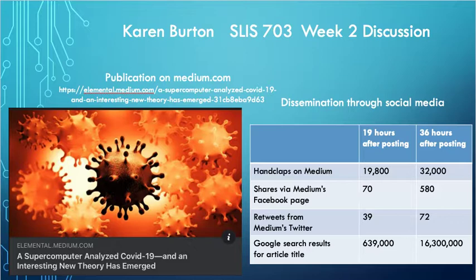My piece of information is the article titled 'A Supercomputer Analyzed COVID-19 and an Interesting New Theory Has Emerged: A Closer Look at the Bradykinin Hypothesis.' I first encountered this article through the Facebook share of a friend of mine working on her Ph.D. in Biological Sciences. The article was written by Thomas Smith and published on the publicly accessible website Medium.com. It explains the findings of a scientific paper and provides a link to the original paper. Therefore, the article is a secondary source, and the paper is the primary source.